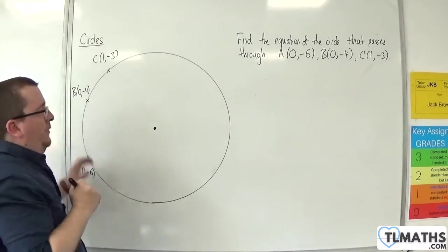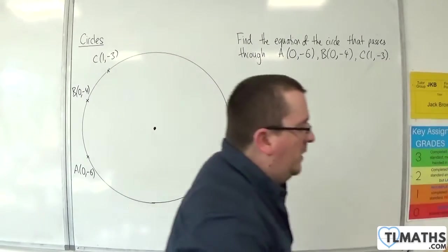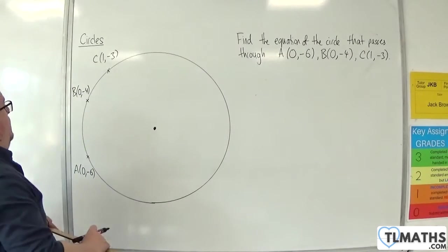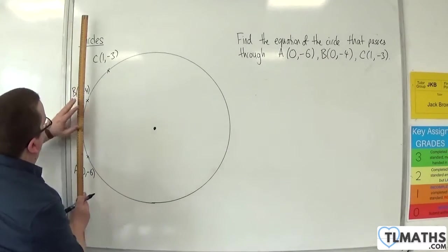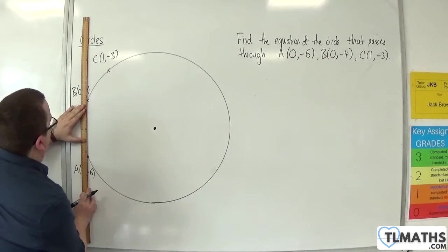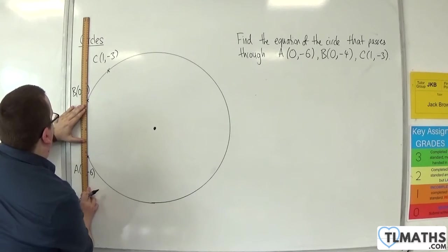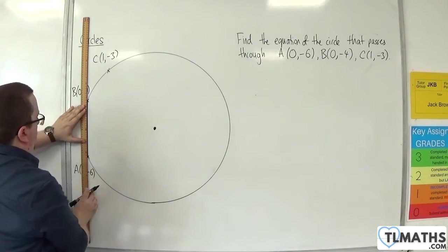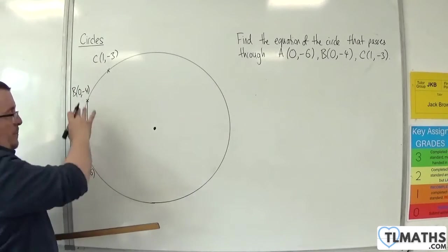OK, so this is about where they are. So what do I need to do here? Well, what I'm going to do is I'm going to find the perpendicular bisector of two pairs of these. So first of all, I'm going to look at A and B.